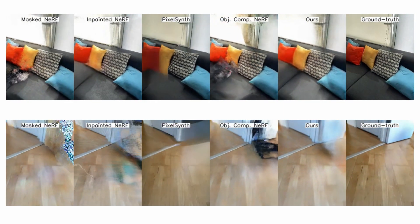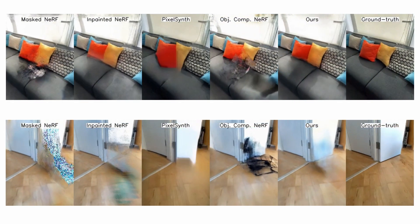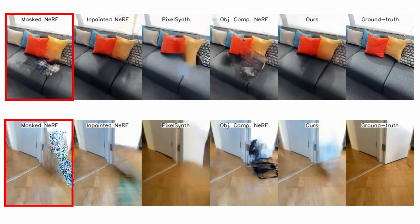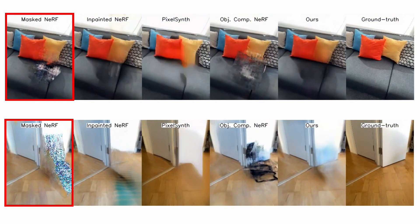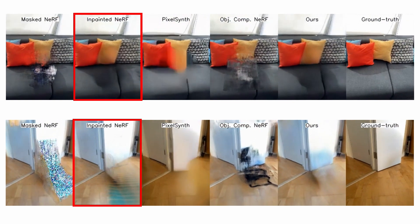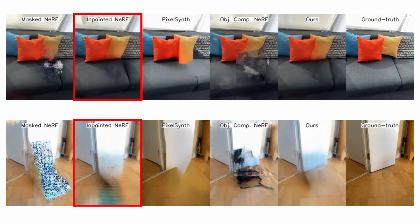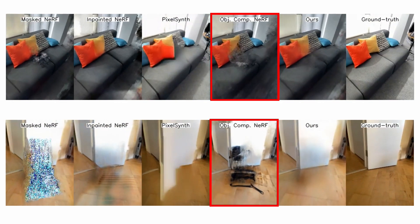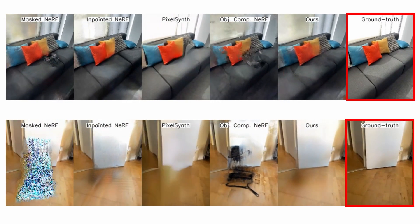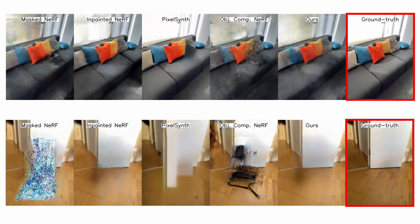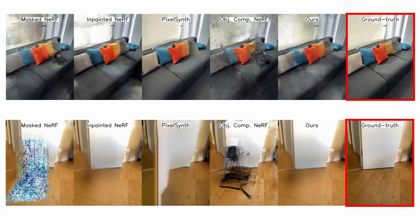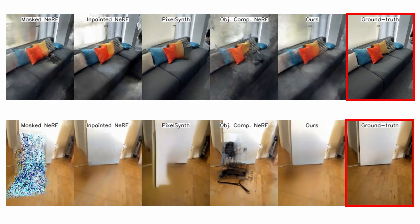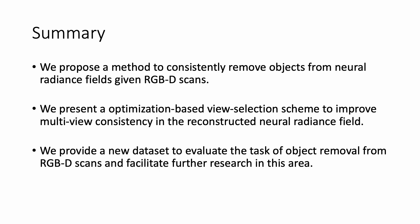Here we show our comparison to the baselines. The baselines are from left to right: masked NeRF where we just don't optimize inside the masked region, inpainting NeRF where we train the model without the view selection scheme, PixelSynth, object compositional NeRF, ours, as well as the ground truth. One can see that compared to the baselines, the flickerings and artifacts are significantly reduced.